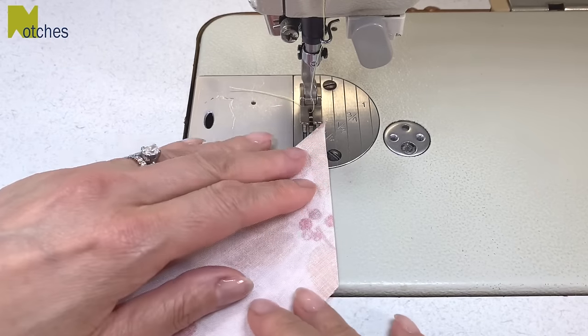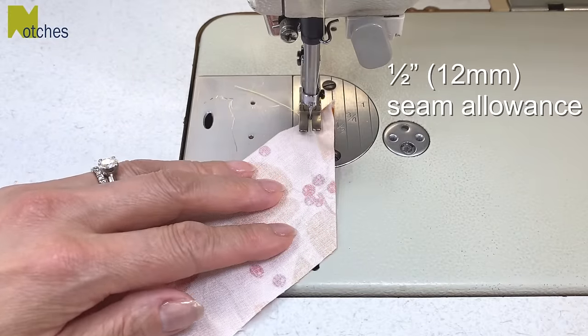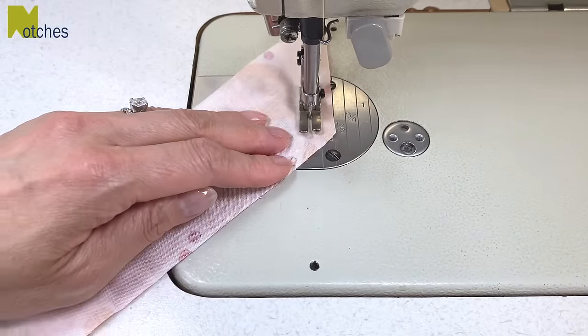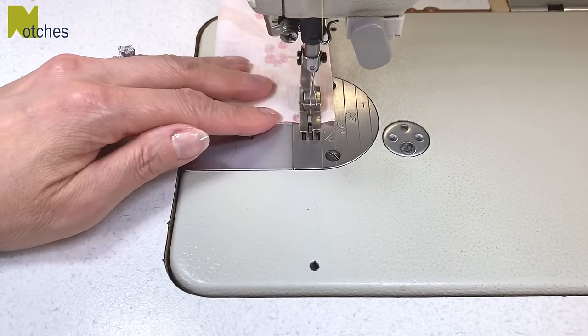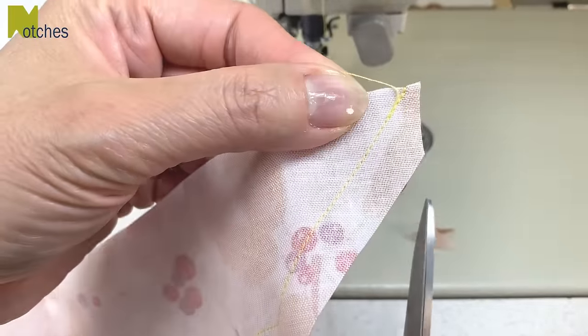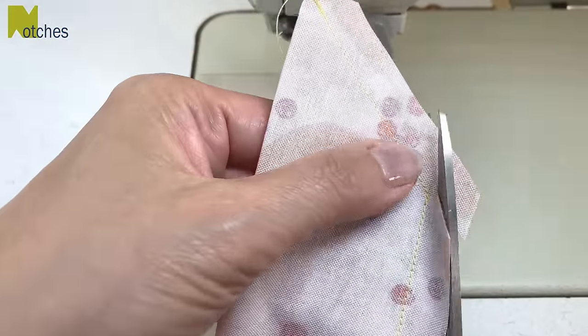Use a half inch seam allowance, start with the back tack, stitch towards the corner, pivot and then continue stitching all the way to the end and back tack to finish. Then trim your corners on an angle, making sure you're not cutting too close to the stitching.